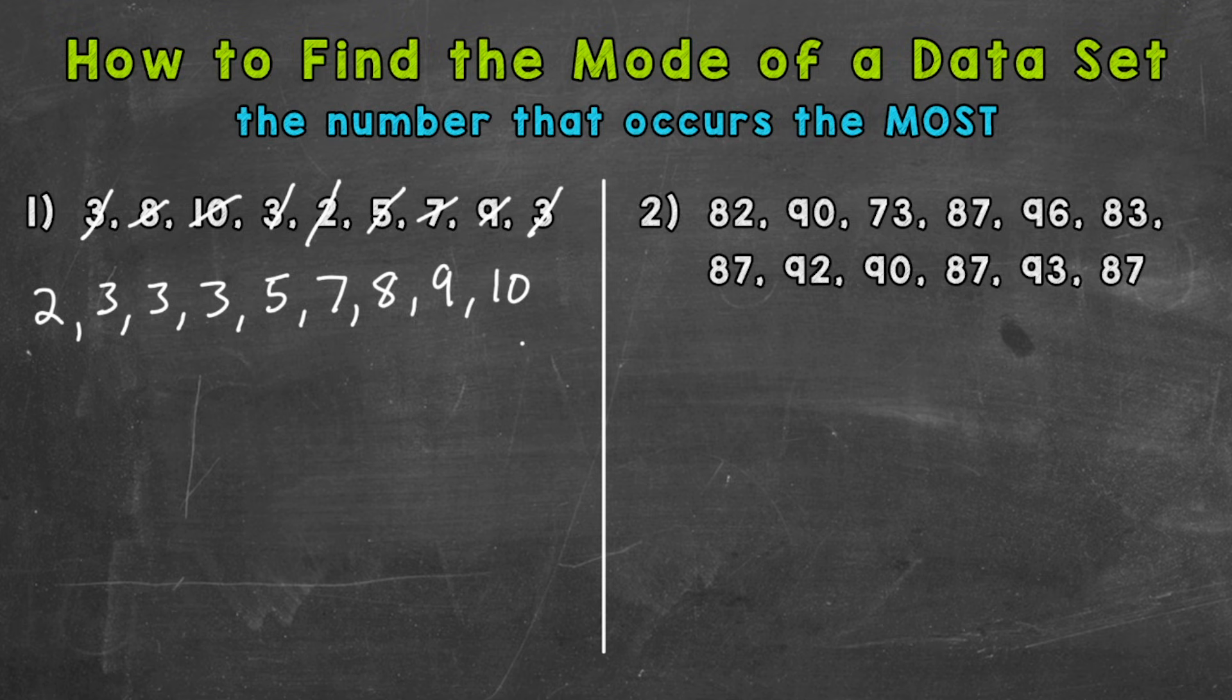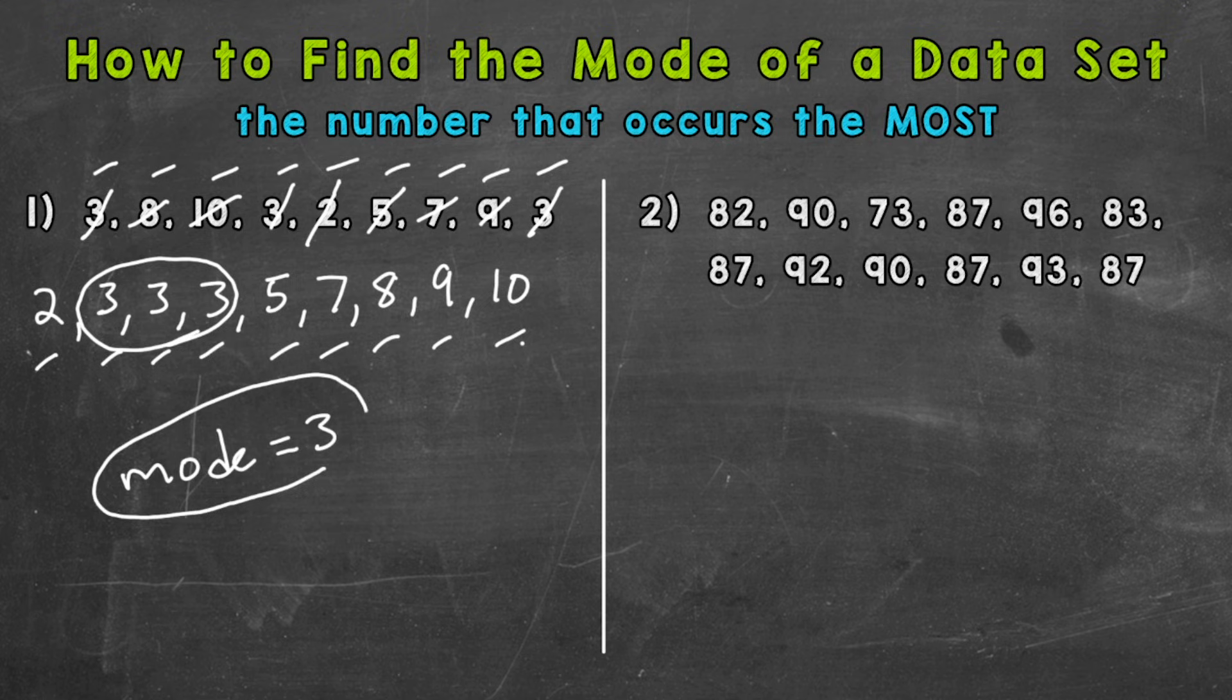Then we have a nine and lastly a ten. Just to double check, let's see how many numbers we had in our data set. One, two, three, four, five, six, seven, eight, nine. Then we double check that with our list to make sure they match. One, two, three, four, five, six, seven, eight, nine. So we are good to go. Our mode is going to be our three here. We have three threes, so that occurs the most. Mode equals three. It's as simple as that - whatever occurs the most.